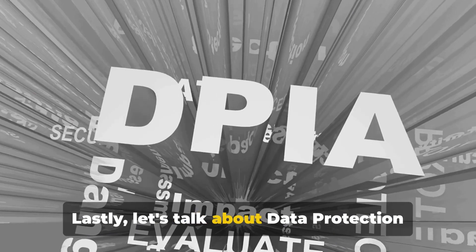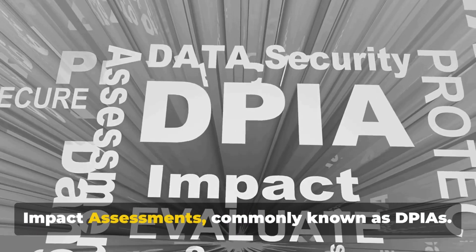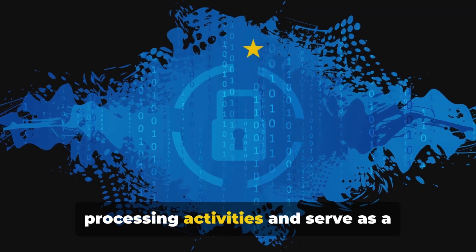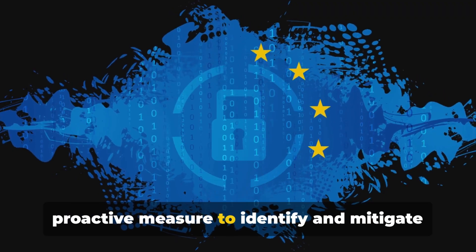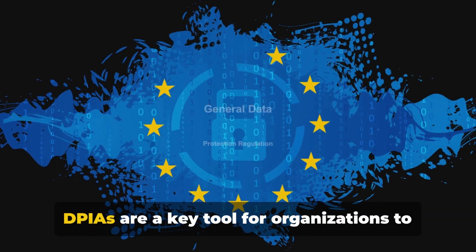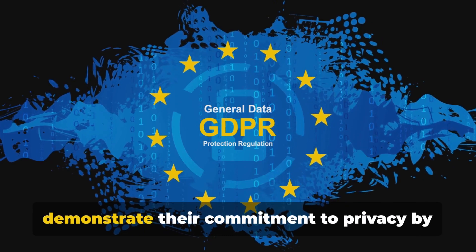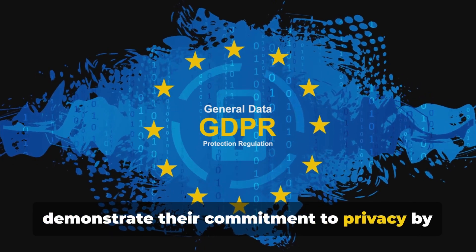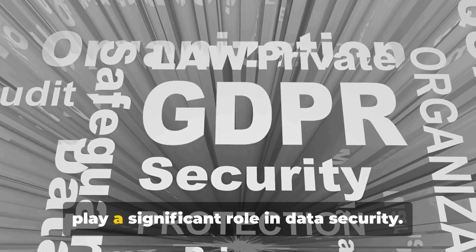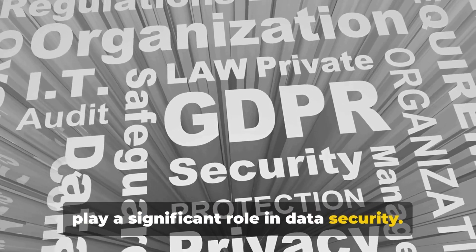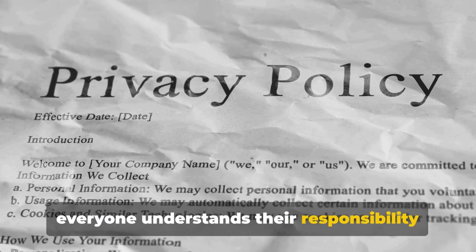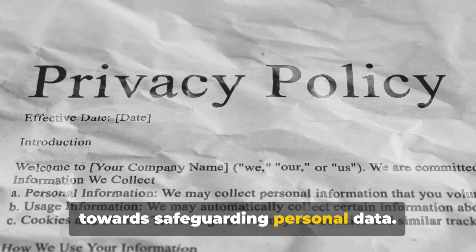Lastly, let's talk about data protection impact assessments, commonly known as DPIAs. These are conducted for high-risk processing activities and serve as a proactive measure to identify and mitigate potential data protection risks. DPIAs are a key tool for organisations to demonstrate their commitment to privacy by design and default. In conclusion, organisational measures play a significant role in data security — they help create a culture of data protection where everyone understands their responsibility towards safeguarding personal data.